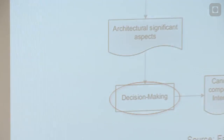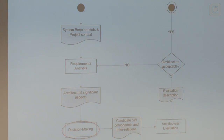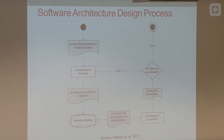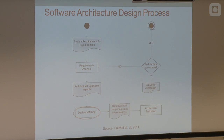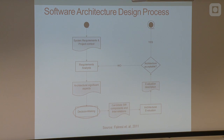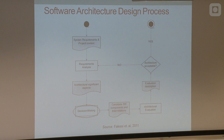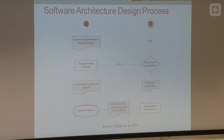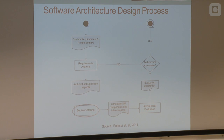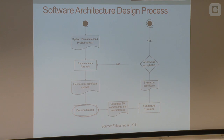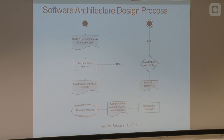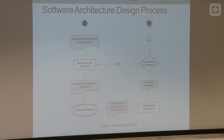You are familiar with the typical software development process. That usually starts from the requirements — it is a problem domain, a problem description. You analyze the requirements and then analyze the architecturally significant aspects of the system. Then you make decisions about architecture, consider different candidate solutions, choose one, evaluate your decision, and either go further or come back again. It is iterative usually these days.